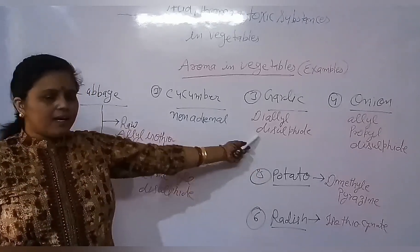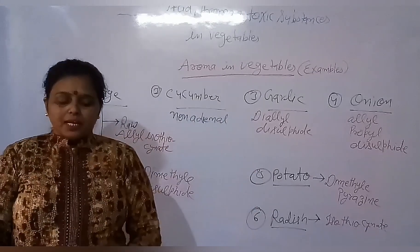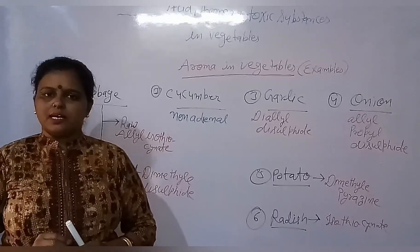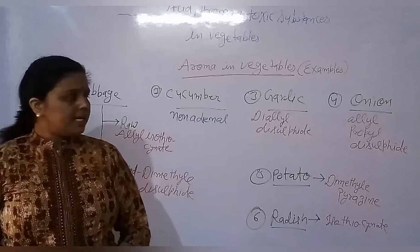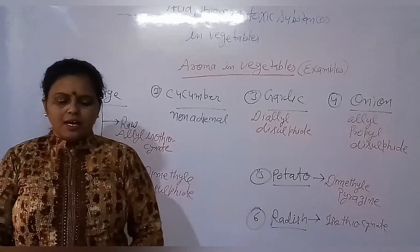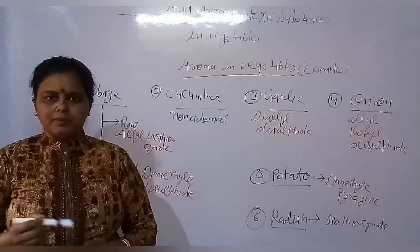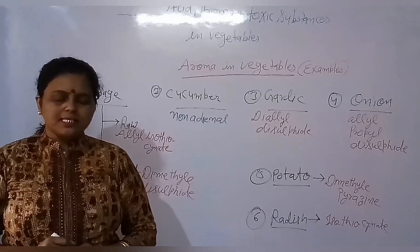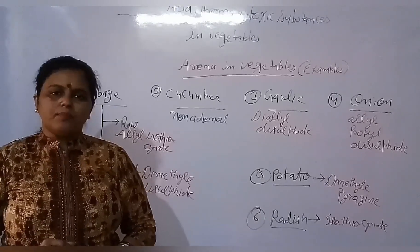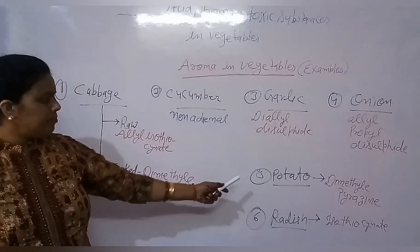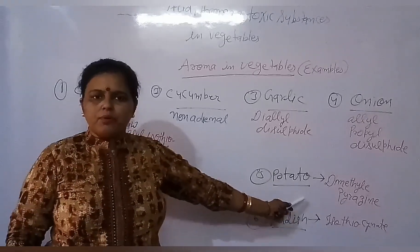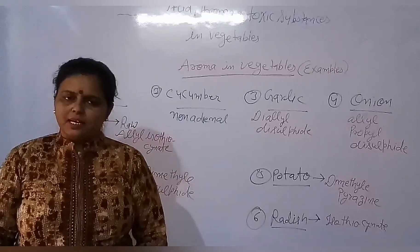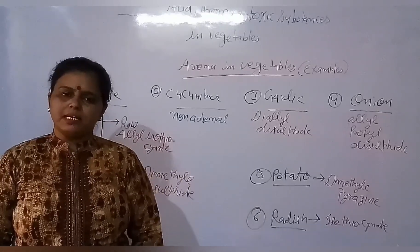One aroma compound is a vegetable oil called Di-allyl Disulfide. Another aroma compound found in vegetables is called Di-methyl Pyrazine.